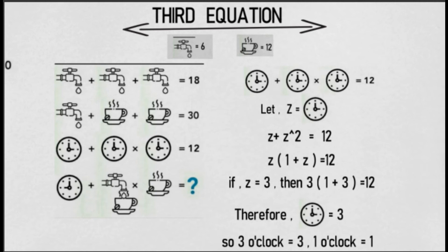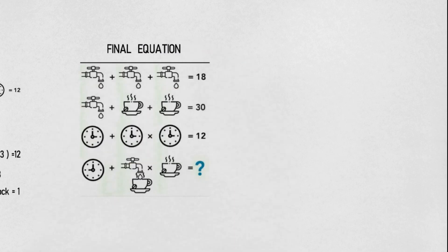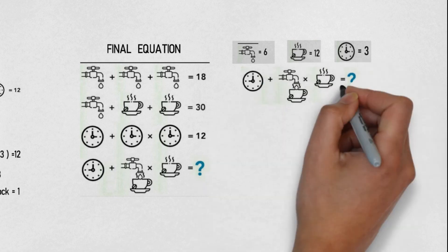So this is end of our third equation. By the end of third equation we have all three items' values. Now friends, jumping on to our final equation. In the final equation we have all these 3 items present: clock, tap, and coffee mug. We have all three items' values. We will put them in this equation and solve it.